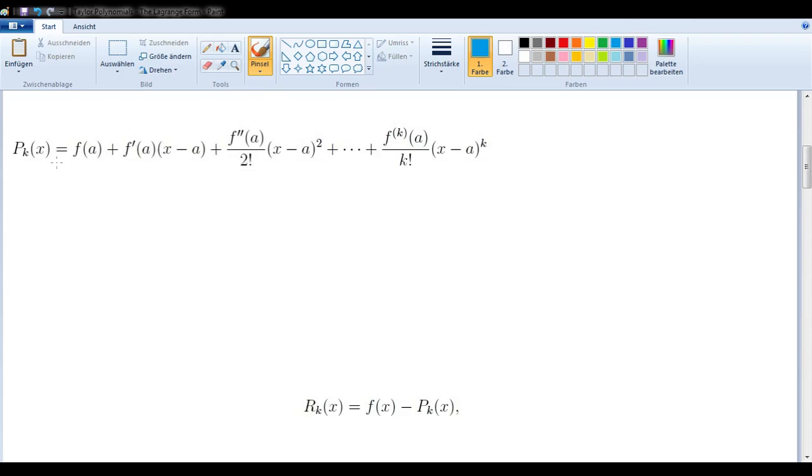You'll recognize this here as a Taylor polynomial, centered at a, and being used to emulate the function f. And this k here just signifies that we're going up to the kth derivative of f.